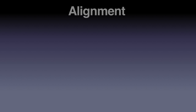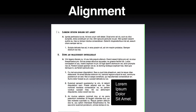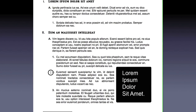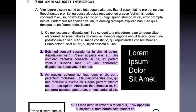The next principle, alignment, refers to the position of the elements in your document relative to each other. In this example, each heading is aligned left, and each subtopic is indented beneath and aligned with each other. In addition, graphics are aligned with their associated text.